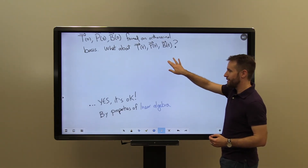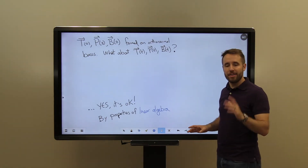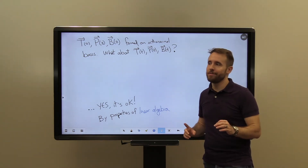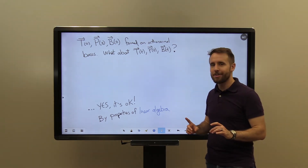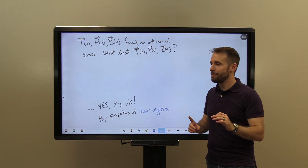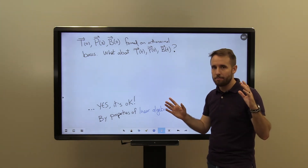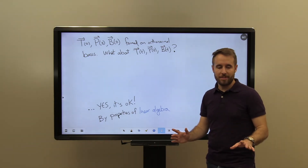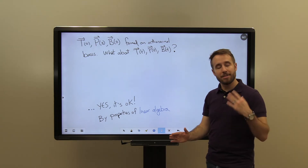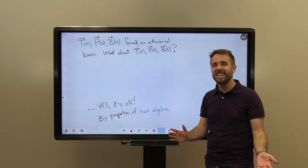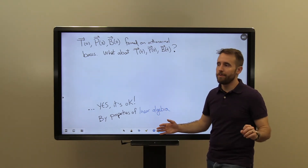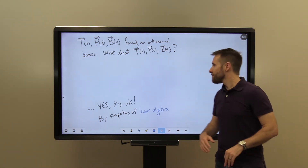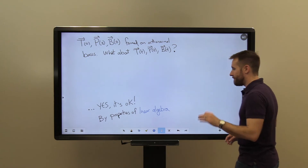It turns out they do continue to form an orthonormal basis, and this is true by properties of linear algebra. From this point, the argument is optional for those with some linear algebra background. We'll state certain facts that would be covered in a linear algebra course — you're invited to keep watching but shouldn't feel obligated, and if some facts feel unfamiliar, don't feel overwhelmed.